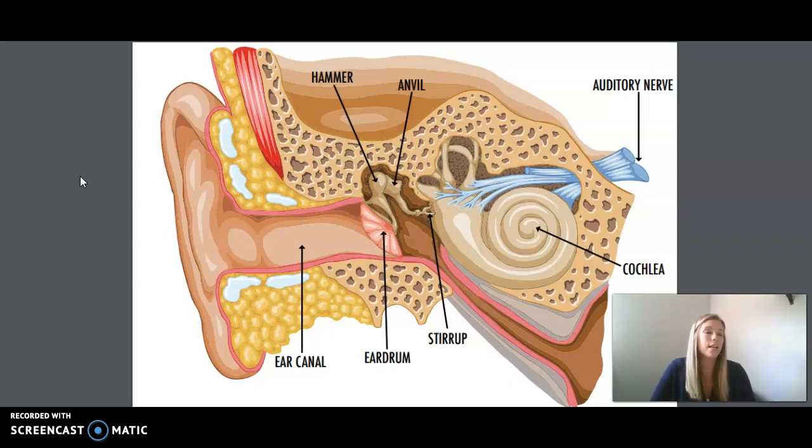Your middle ear is a tiny, air-filled space just behind your eardrum. As the eardrum vibrates or shakes, three itty-bitty bones inside the middle ear begin to move, too. These three bones are named for their shapes: the hammer, the anvil, and the stirrup. They are the smallest bones in your body. The stirrup is the smallest of the three, no bigger than a grain of rice.